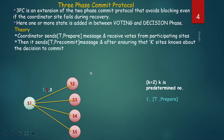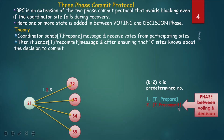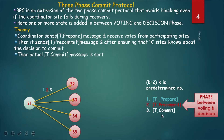After ensuring K sites know about the decision to commit — here K is 2 — the coordinator site sends a T-pre-commit message. Message number 2 is T-pre-commit. This is the phase between voting and decision, which is why it is called the 3-phase commit protocol. After that, the actual T-commit message is sent — message number 3 is T-commit — and it is sent to all sites.